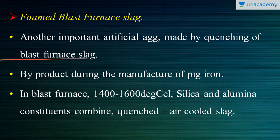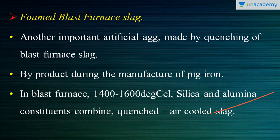Blast furnace slag is a byproduct formed during the manufacture of pig iron in the blast furnace — essentially a waste material. In the blast furnace, temperatures reach 1400°C to 1600°C, where silica and alumina constituents fuse together to form a mixture. This mixture is then quenched and allowed to cool down slowly, forming what is known as air-cooled slag.